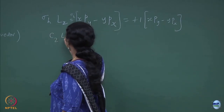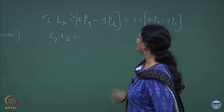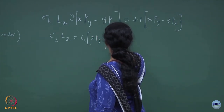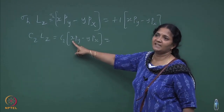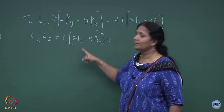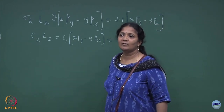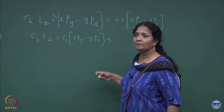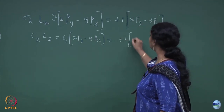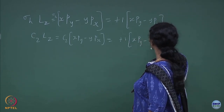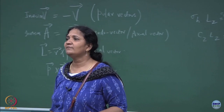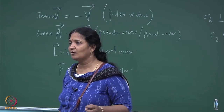Similarly, C2 acting on L_z: C2 on (x·p_y − y·p_x). Under a 180-degree rotation about the z-axis, x changes sign and p_y changes sign; y changes sign and p_x changes sign. So it is minus times minus which is plus, giving plus 1 times (x·p_y − y·p_x). Thus the z-component of the axial vector, L_z, is the basis for the unit representation of C2H.